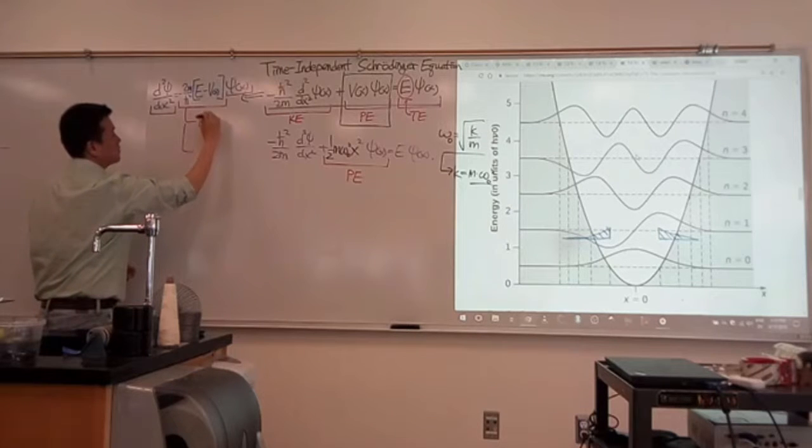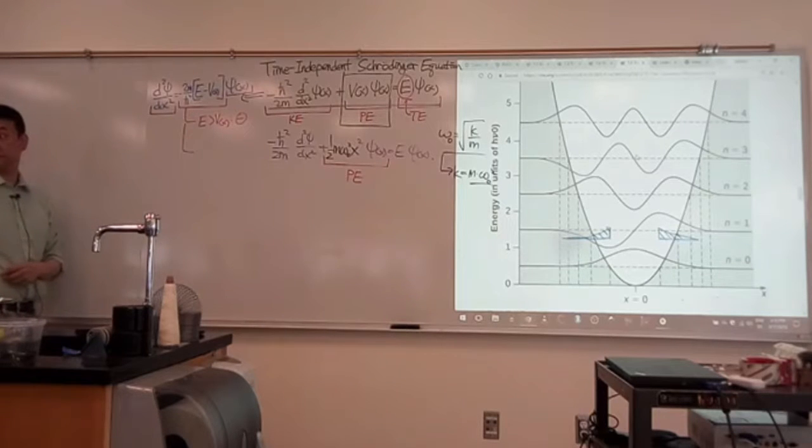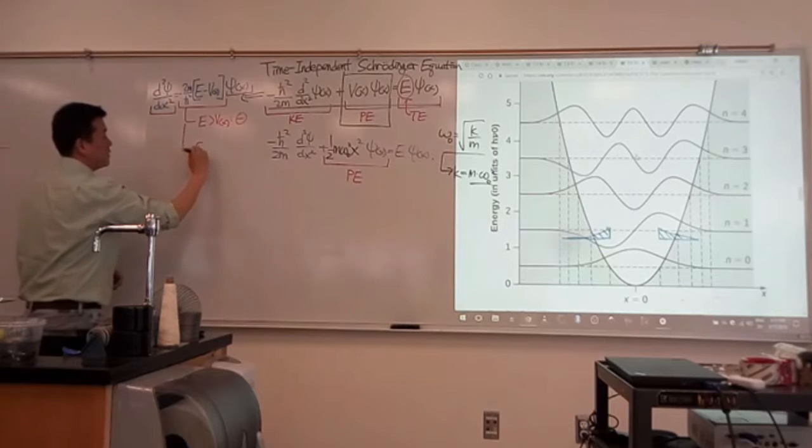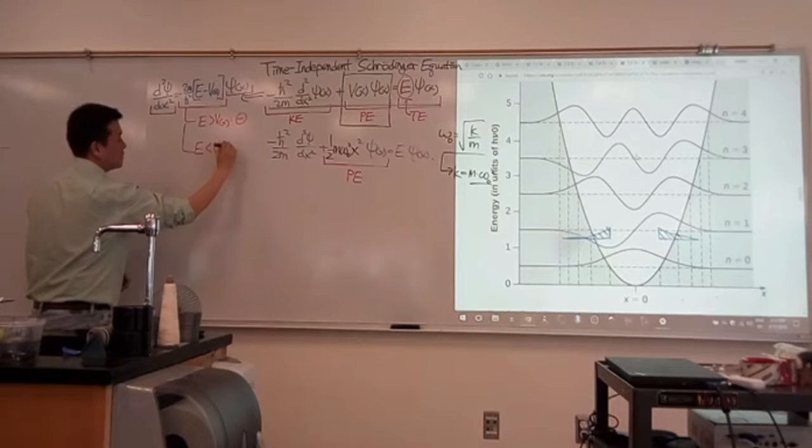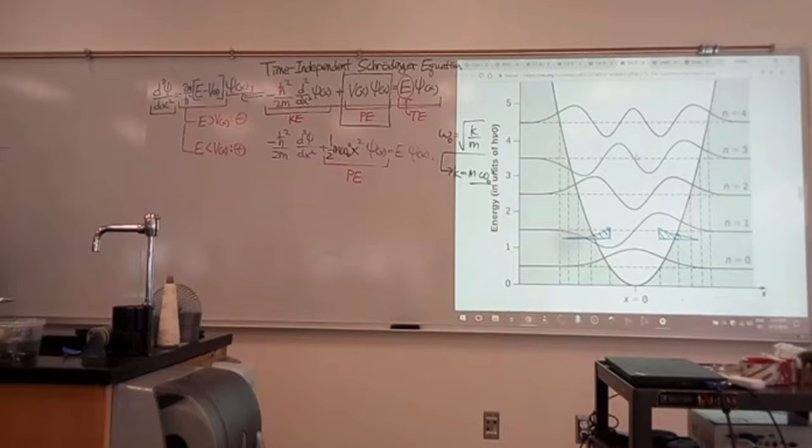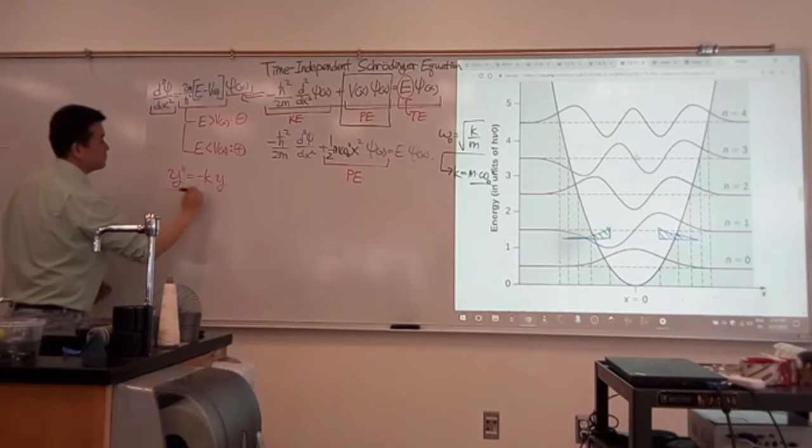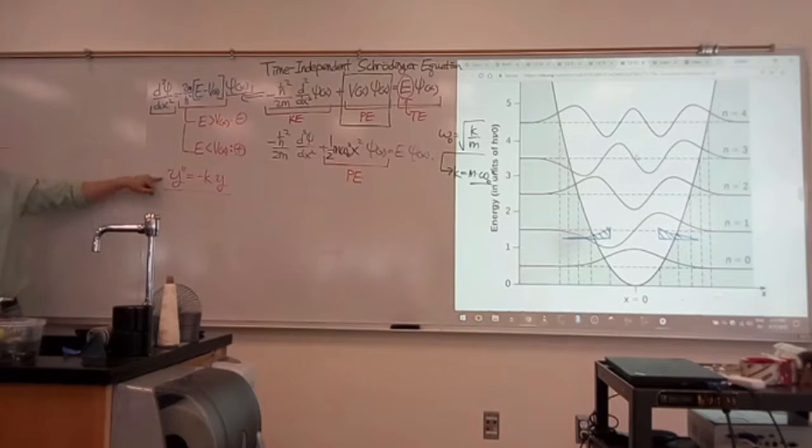The key here is that you have the second derivative, which will give you your function times some kind of number. This number can be divided into at least two distinct categories. If E is greater than V of x, then this number is negative. And if E is smaller than V of x, then this number as a whole is positive. Imagine you have a simpler differential equation that looks like y double derivative equals minus ky. What kind of solution do you expect for y of x here? Sines and cosines, or complex exponentials.